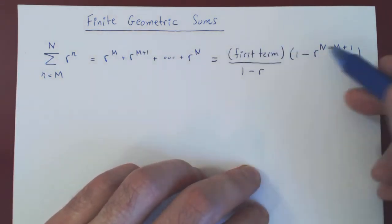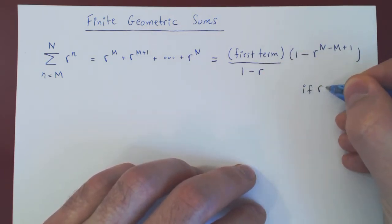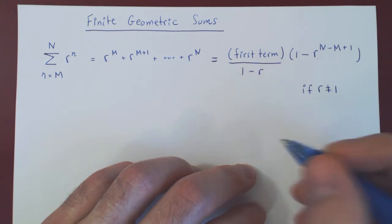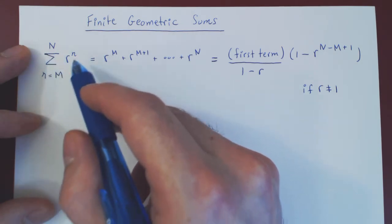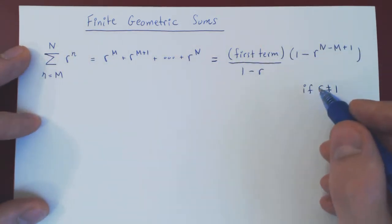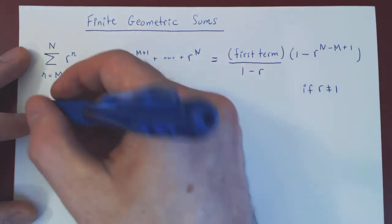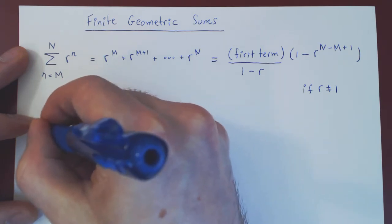And this is always true as long as r is not equal to 1. And here there is no issue of convergence or divergence. A finite sum of finite numbers will always be finite, therefore will always exist. And if r is equal to 1, then the result is trivial, right? So we'll mention it, but it's not really interesting.